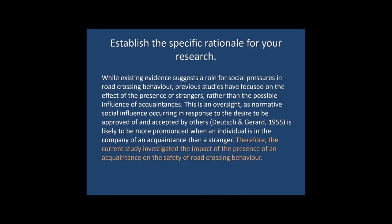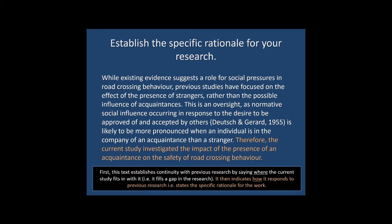Let's now turn to how you establish continuity between the literature you've reviewed and your own study — in other words, how you establish the specific rationale for your research. The author does two main things here: in the white text they indicate how their research fits in with the existing research, establishing continuity with previous work; then in the orange text they indicate how their reported research responds to the previous research, thereby stating the specific rationale for their study.